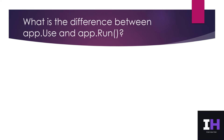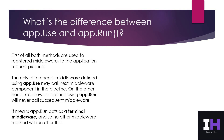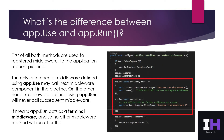Q6. What is the difference between app.Use and app.Run? Both methods are used to register middleware to the application request pipeline. The only difference is middleware defined using app.Use may call the next middleware component in the pipeline. On the other hand, middleware defined using app.Run will never call subsequent middleware — it acts as a terminal middleware, so no other middleware method will run after this. Sample code is shown for your reference.